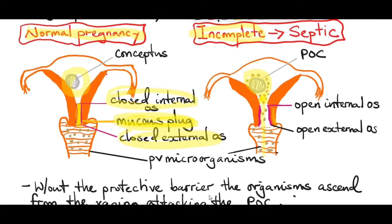If these infected products of conception have not yet been evacuated, the infection starts spreading. The microorganisms multiply and spread, resulting in endometritis — inflammation and infection of the uterus. And if that infection is not contained, it spreads to the fallopian tubes as well as the ovaries, resulting in a tubal ovarian infection which can result in a tubal ovarian abscess.